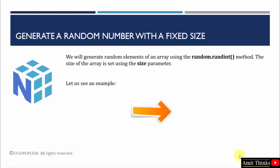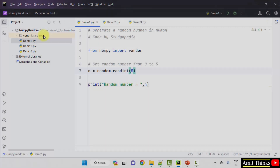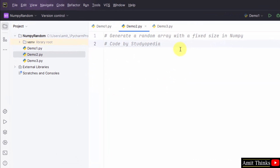Now let us see how we can generate a random number with a fixed size. We will generate random elements of an array using the random.randint method. Since we are talking about an array, the fixed size will be set using the size parameter.